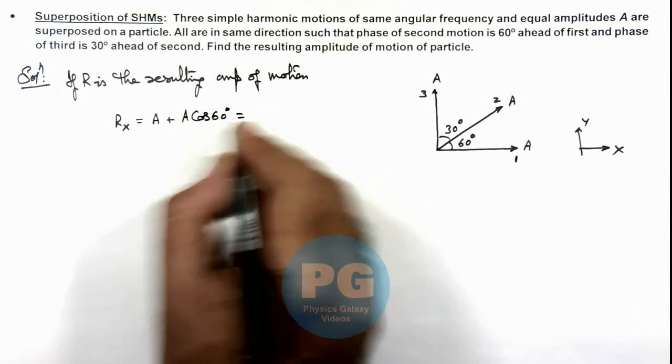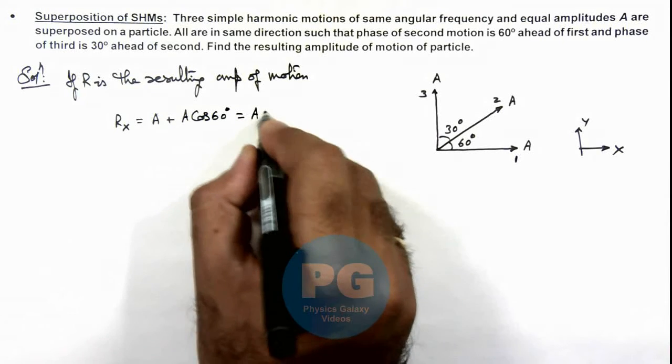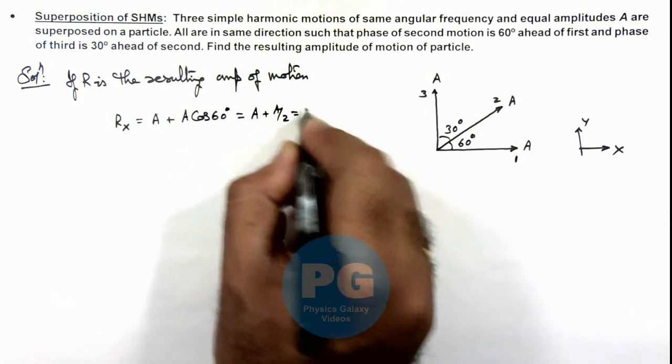So this will be A by 2, which is equal to 3A by 2.